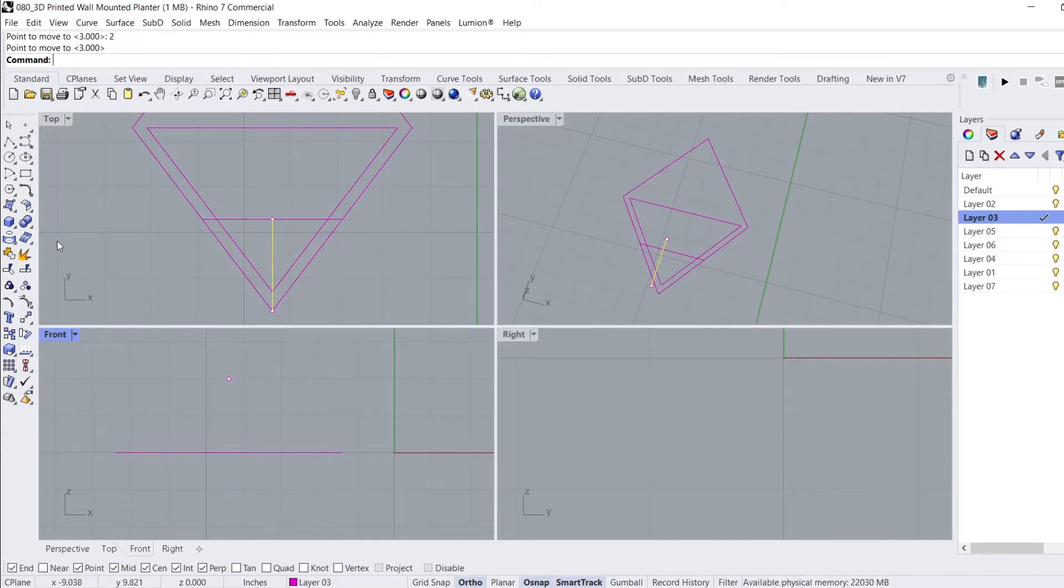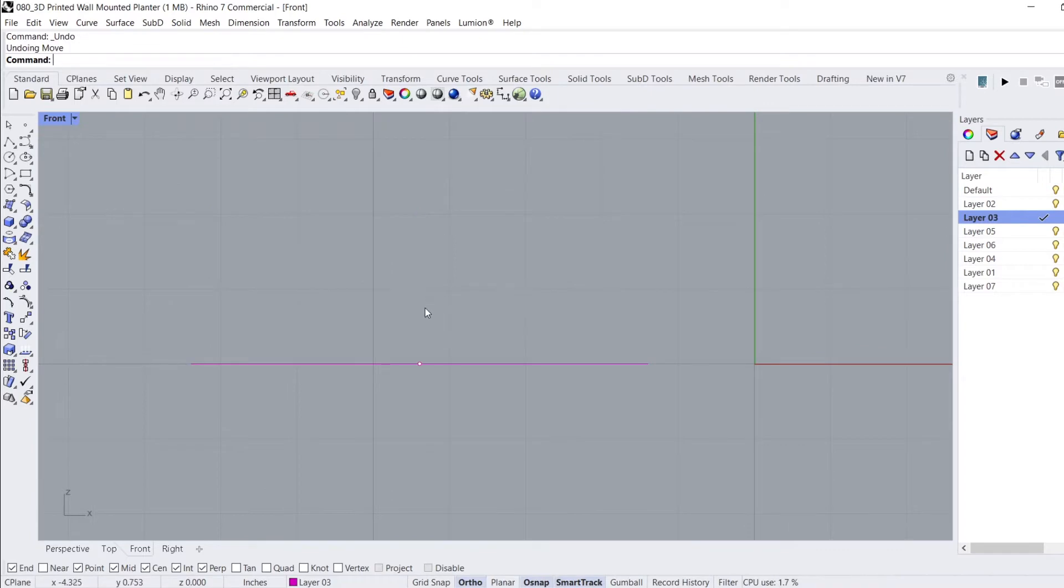Using the Move command in a side view, I move the line up 2 inches. Now, we're ready to create the 3D model.